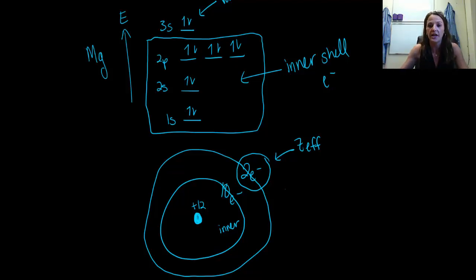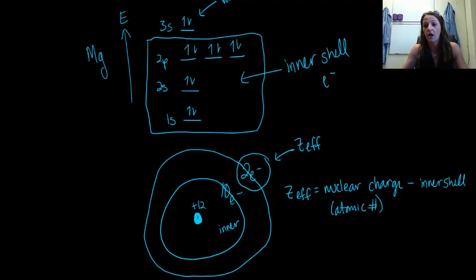So what do these valence electrons actually feel? And so the way we do this is we say that Z effective is equal to your nuclear charge, which is probably more easily represented as atomic number, so your number of protons. And then we subtract out our inner shell electrons. So in this example that's going to be everything in here, so all 10 of those electrons.